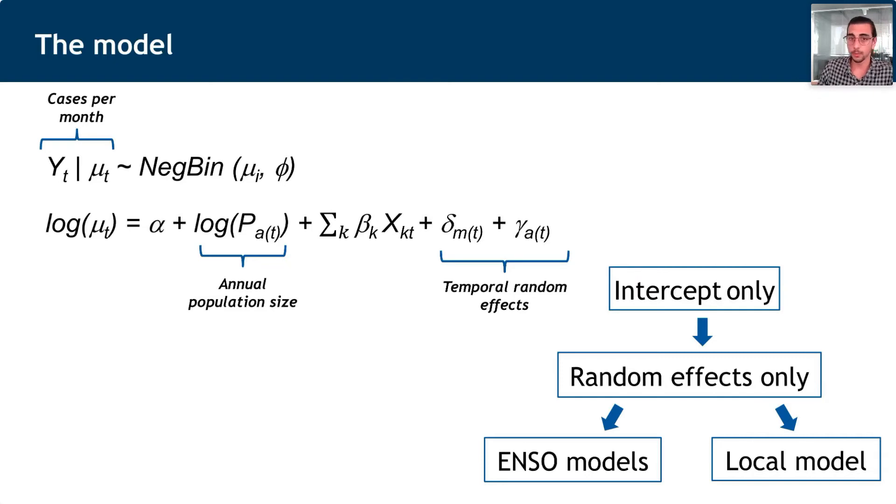One last thing I'd like to mention is that we followed a modeling framework of increasing complexity. We started with an intercept-only or non-informative model, moved to a random effects only model, and then because ENSO modifies the patterns in precipitation and river height, we modeled ENSO effects on one hand and separately the local climate. That's why we have a set of ENSO models and local models.